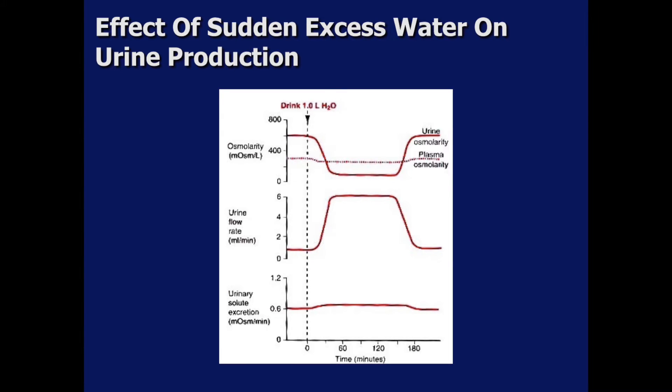We will consider the problem associated with a sudden increase in body fluid due to drinking one liter of water. Under these conditions, the kidney will greatly increase urine flow from one milliliter per minute to six milliliters per minute and decreases urine osmolarity to about 50 milliosmoles. Therefore, only a small excess of solute is lost in the urine, whereas water loss in the urine is increased by six times.